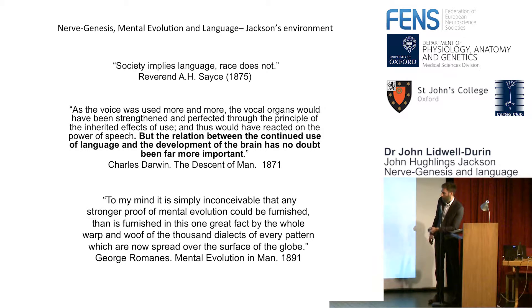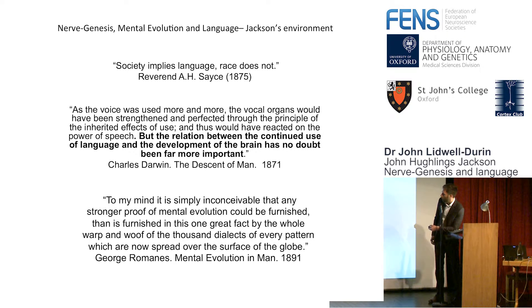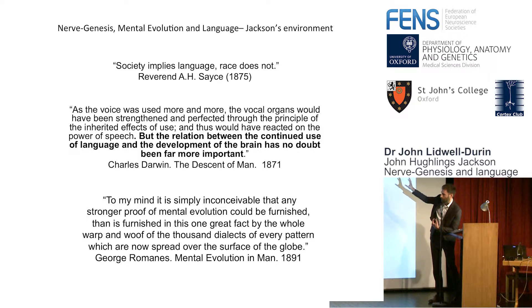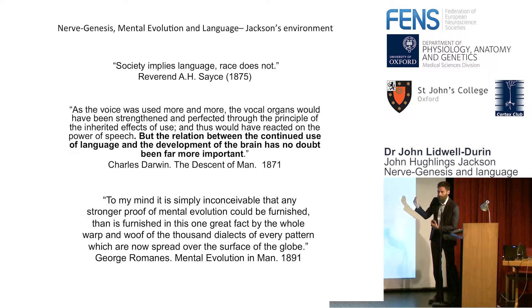At the same time, you have an idea here in The Descent of Man that tells us that the relation between the continued use of language and the development of the brain has no doubt been far more important than the relationship of strengthening of voice muscles and linguistic underpinnings of language within the nervous system. So here in 1871, in Darwin, you're seeing something different from Sayce's position. Darwin is advocating an important link between the evolution of language, spoken word, and the evolution of the neurological correlates of speech.